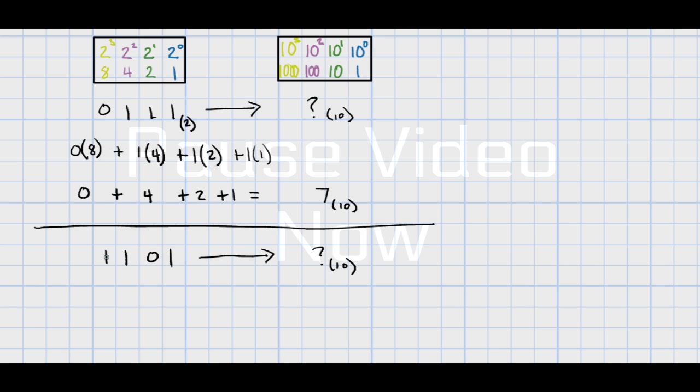To convert 1101 base 2 into base 10, you take 1 times 8, plus 1 times 4, plus 0 times 2, plus 1 times 1. When we simplify this, we get 8 plus 4 plus 1, which equals 13 in base 10.